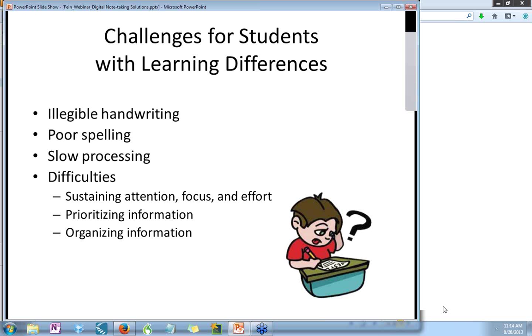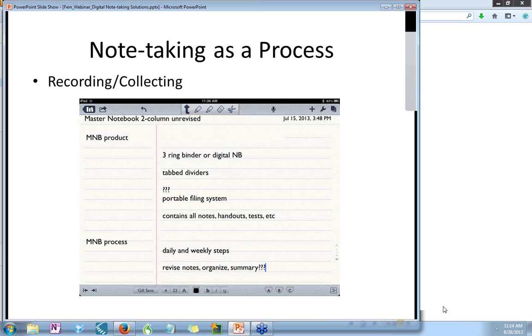We also know that students with learning differences may have added challenges such as illegible handwriting, poor spelling, slow processing, difficulty sustaining attention, focus, and effort, challenges prioritizing information, determining what is the most important information to record as they can't record everything and manage to keep up, and difficulty organizing information.